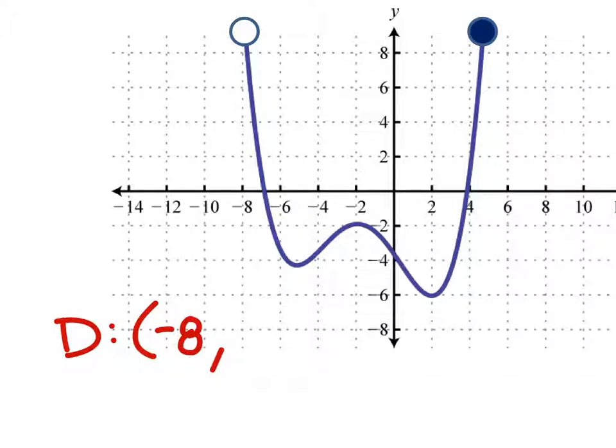How far to the right does this thing go? Yeah, I mean, I'm going to say 5 right here, just so we don't make it too complicated. All right. So, this goes all the way to 5, which is a closed circle, so I'll have a square bracket.